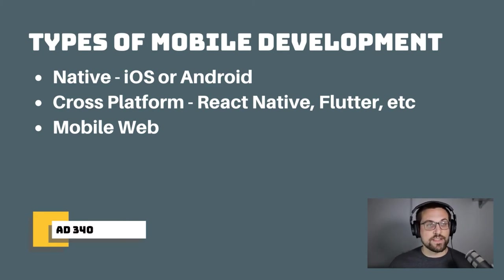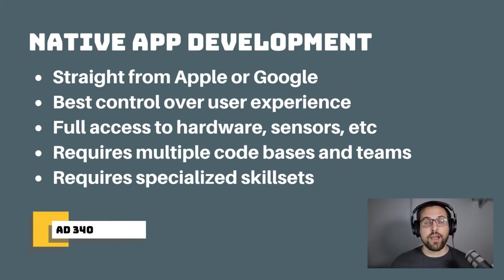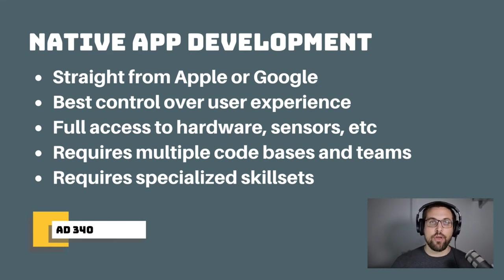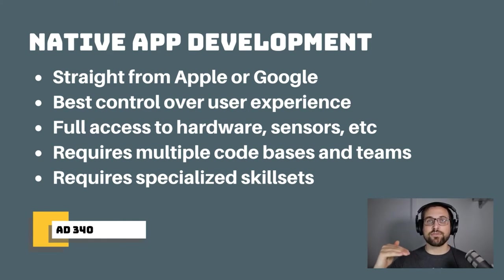For native app development, people typically mean the standard tooling and processes coming straight from Apple for iOS or from Google for Android. Native apps give you the most control over the user experience — when you pull out an Android device, it looks a certain way and many apps follow similar visual guidelines with common interactions. Native applications also tend to give you the best access to hardware, sensors, and APIs, bringing you closest to the hardware level so you have full control over what the device can do.